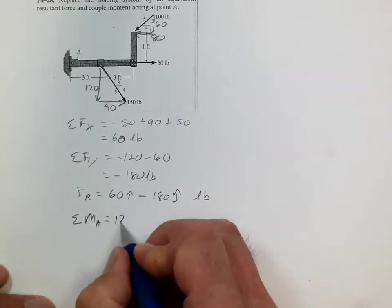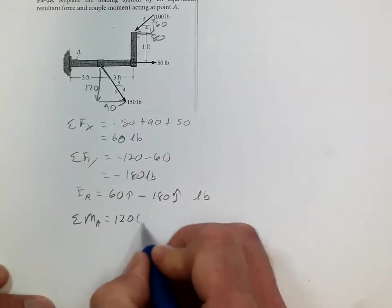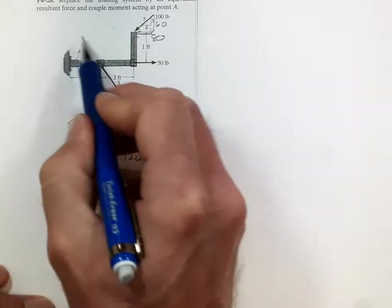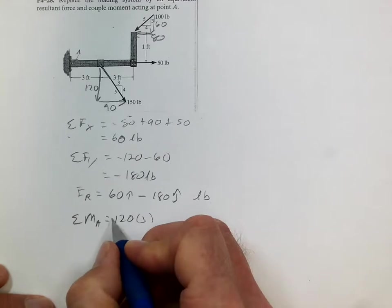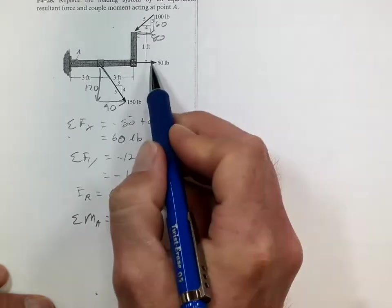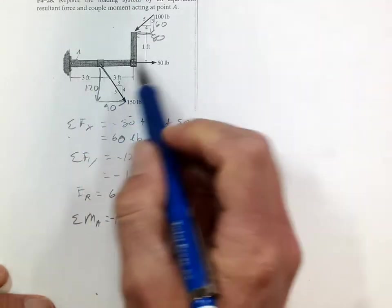Now the 120 times 3 will cause a rotation that way, which by the right-hand rule is negative. The 50 goes through A, so it doesn't matter.